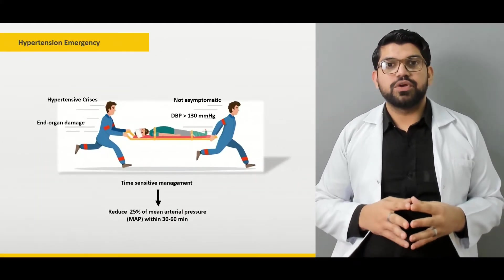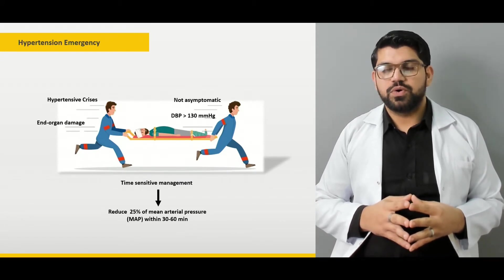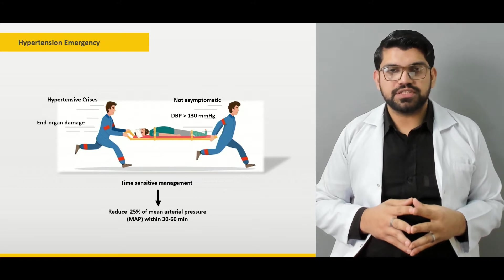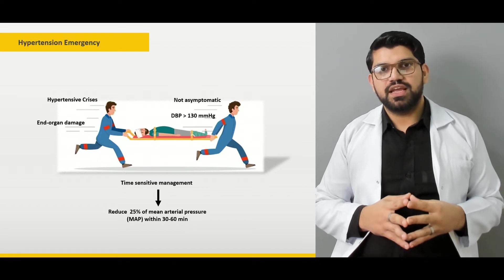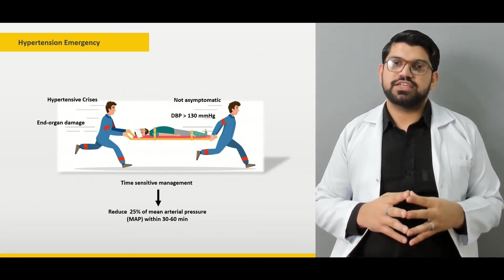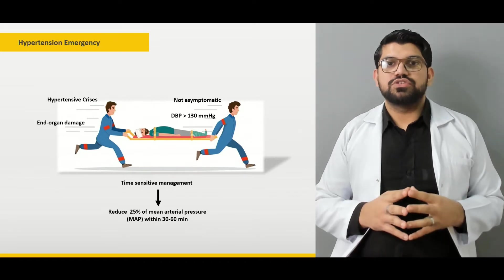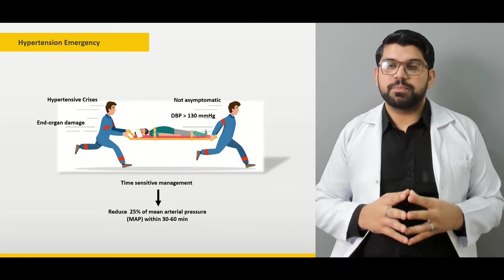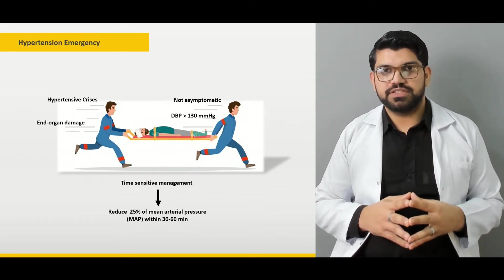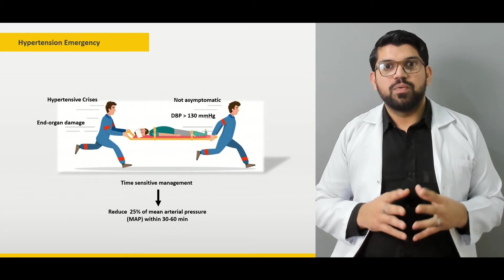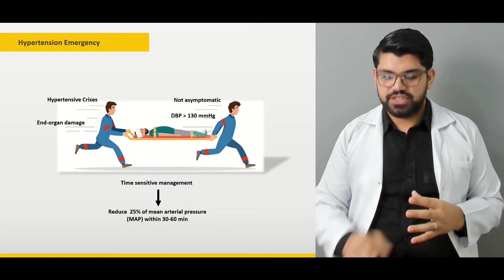Next we talk about hypertensive emergency. We classify hypertensive crisis or hypertensive emergency into two parts: hypertensive emergency and hypertensive urgency, and how to differentiate between them. What do you mean by reducing pressure to a certain limit in a patient with acute hypertensive emergency? What do you mean by end organ damage? That will be explained under this section.